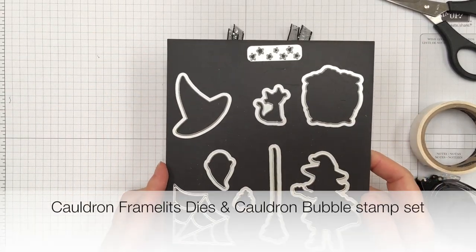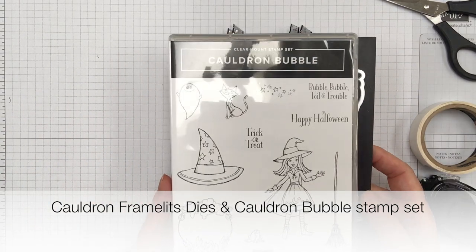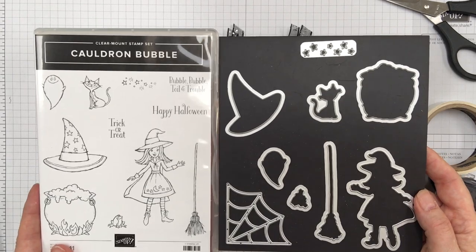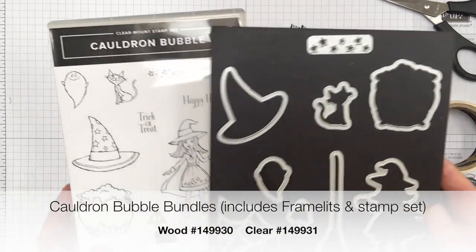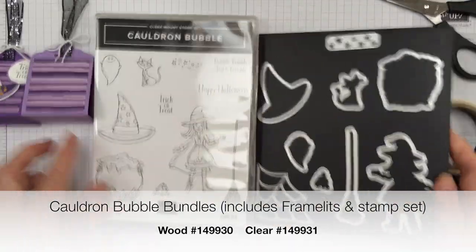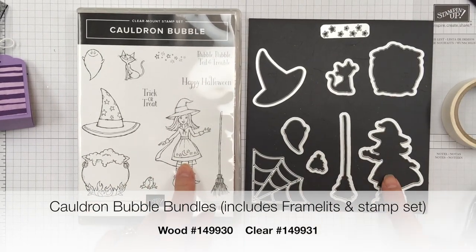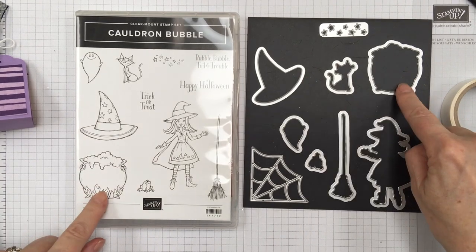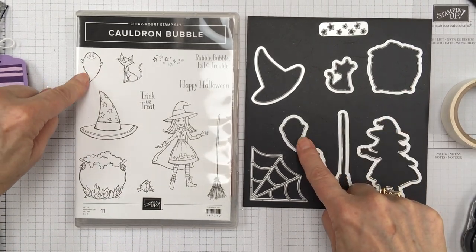So these are the cauldron framelits and they work with the cauldron bubble stamp set, which I am going to use today. But if you purchase these as a bundle, you get 10% off. But the really cool thing is that as you can see, here let me move these. So you've got the witch and here's her framelits, the hat, the cauldron. This is the cat and the ghost.